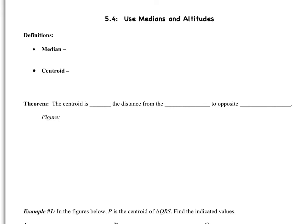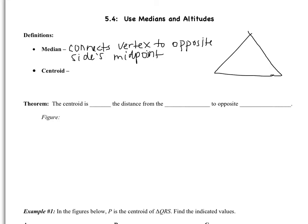So first thing we should probably talk about is what is a median. Well, a median connects a vertex to the opposite side's midpoint. If we give ourselves a triangle, vertex to the opposite side's midpoint. So here's our midpoint. Here's vertex to midpoint. So this is a median. So there's three medians in every triangle, one coming from each vertex.